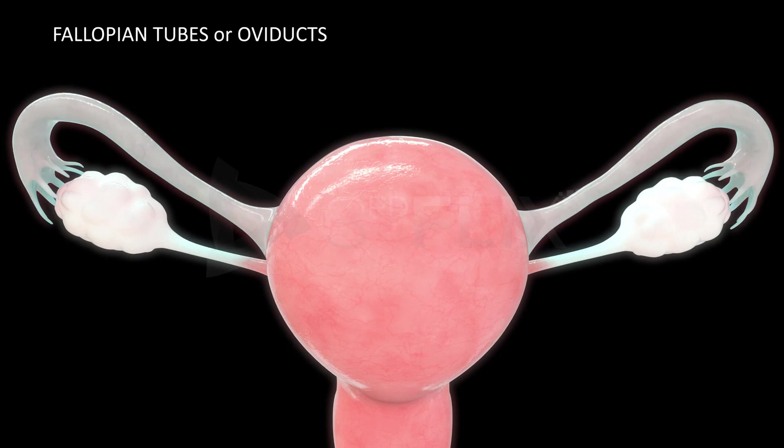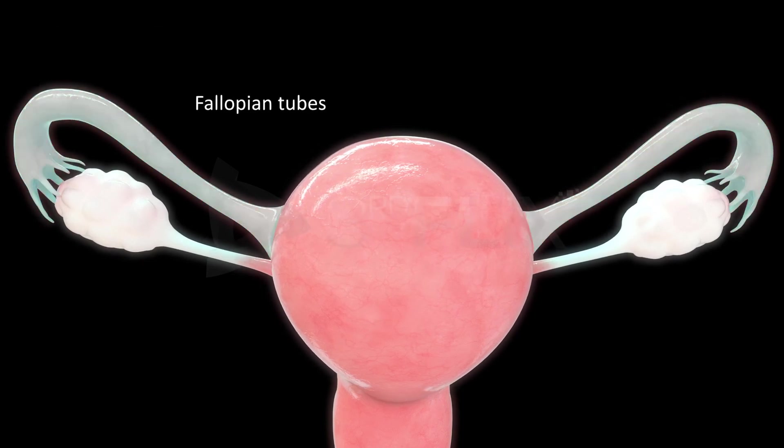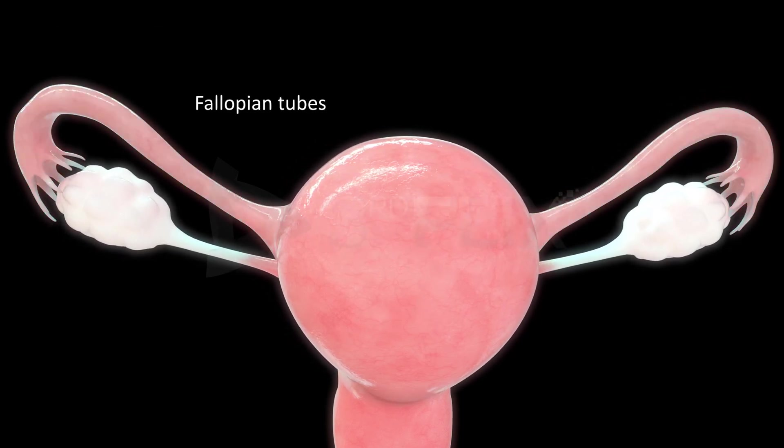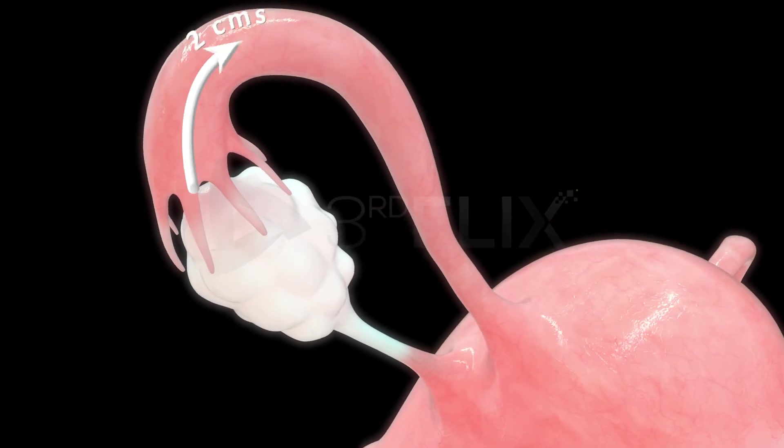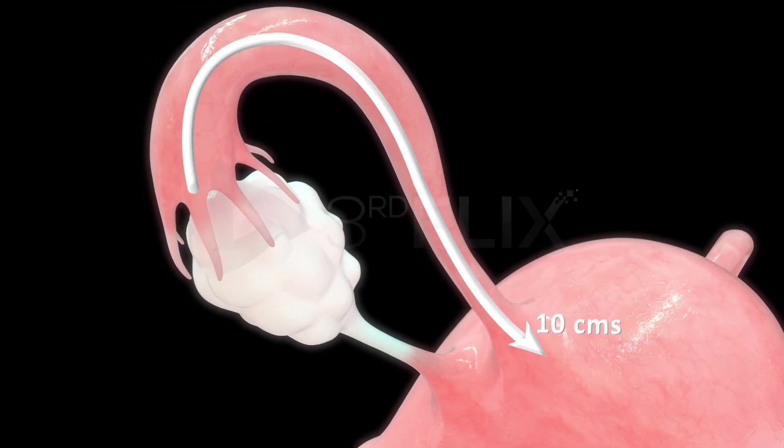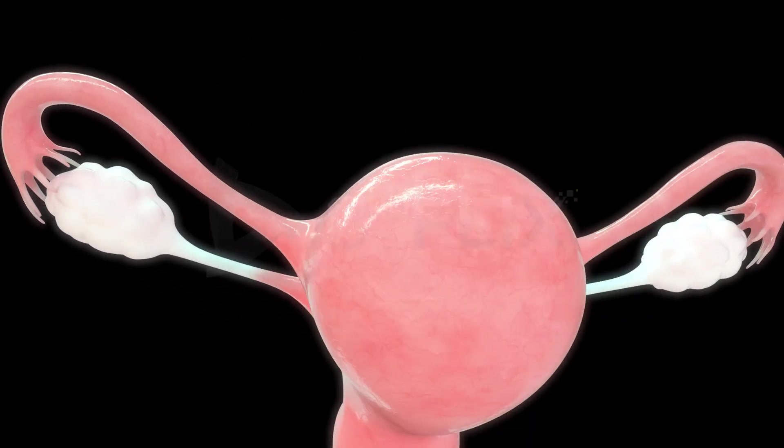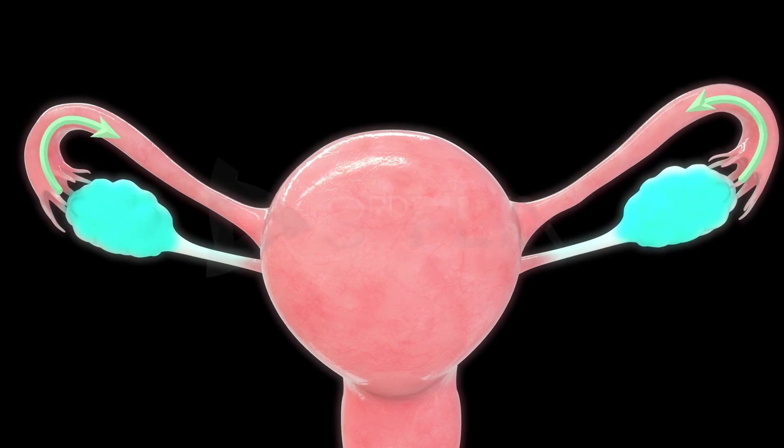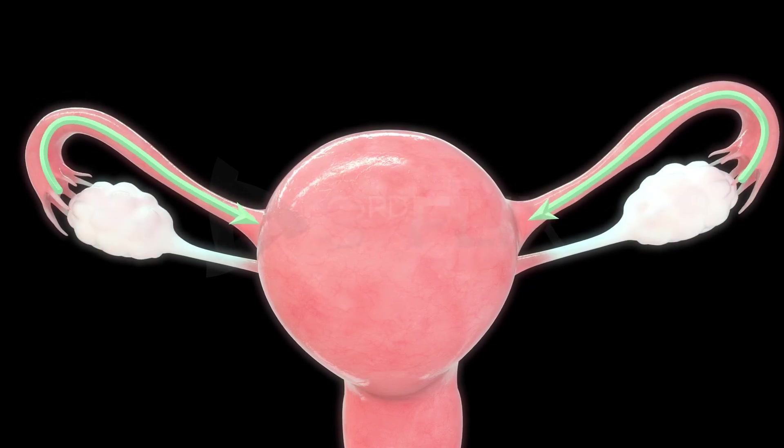Fallopian tubes or oviducts: The fallopian tubes are a pair of muscular tubes. Each fallopian tube is about 10 cm long and extends from the periphery of the ovary of its side to the uterus.